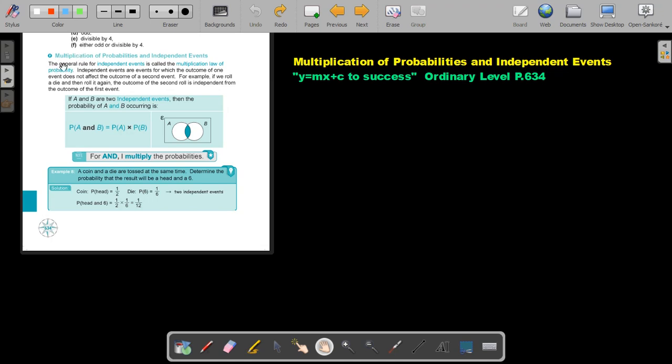The general rule for independent events is called the multiplication law of probability. Independent events are events for which the outcome of one event does not affect the outcome of a second event.